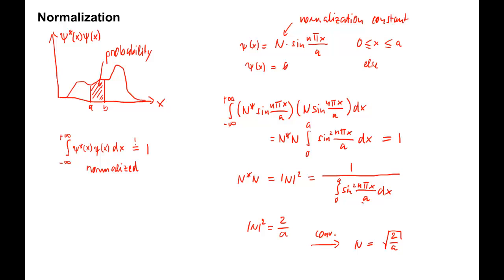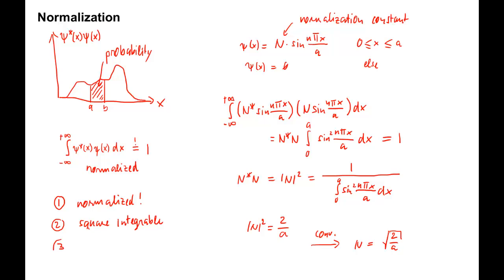In summary, the following three points are important. First, a function must be a solution of the Schrödinger equation, and it must be normalized, in order to be a physical wave function. Second, in order to be normalized, the wave function has to be square integrable — that is, the normalization integral must exist. Third, the normalization constant N, and therefore the wave function, can have any phase, but conventionally N is chosen to be real and positive.